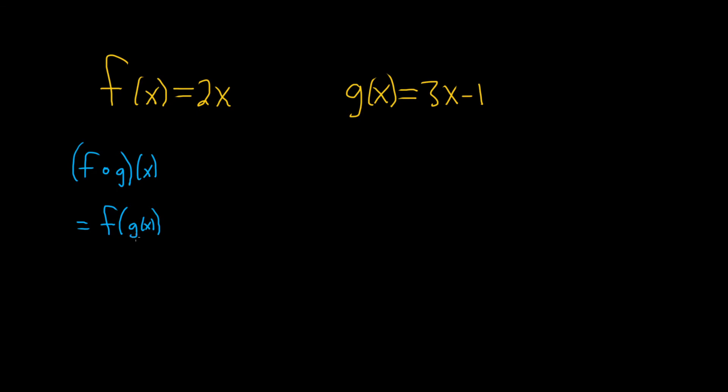Now the way this works is you work this out by thinking right to left. So here g of x is 3x minus 1. So let's go ahead and replace the inside piece. So this is f of 3x minus 1. Okay, so now we look at f. So f of x is 2 times x. So here, this entire piece is our x. So this is 2 times, and then instead of x, it's 3x minus 1.